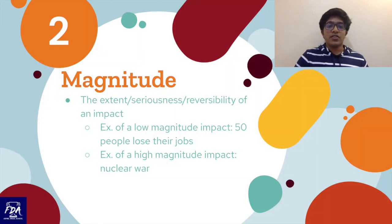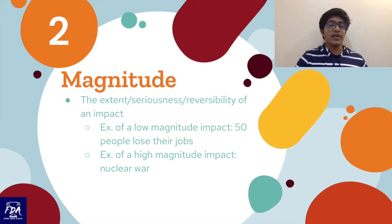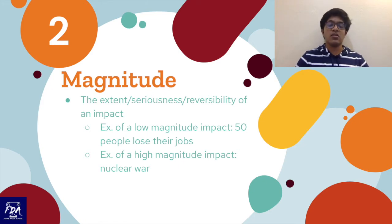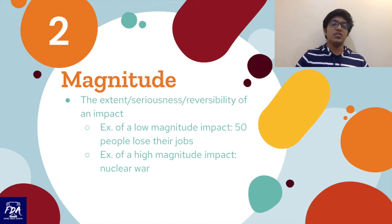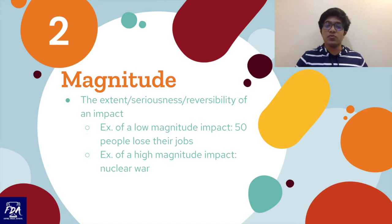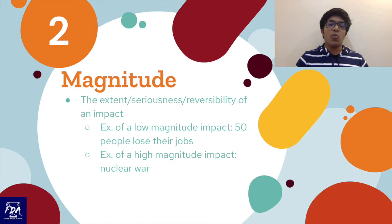The second part is magnitude — the extent, seriousness, or reversibility of an impact. A low magnitude impact would be 50 people losing their jobs, but a high magnitude impact would be nuclear war with all 7.5 billion people on the planet being wiped out. One key thing to note is that reversibility is also part of magnitude — it's how likely the impact can be switched off once it has happened.